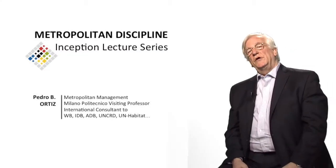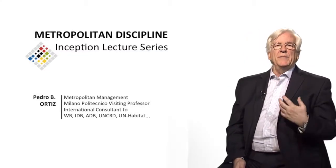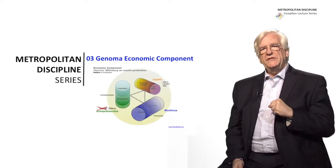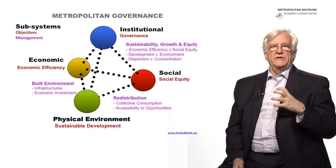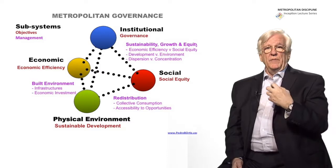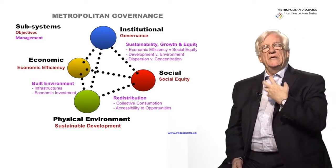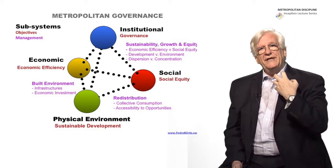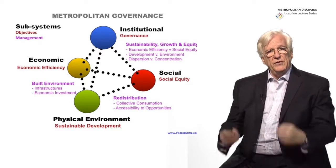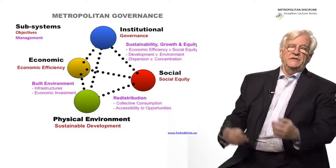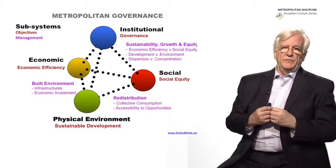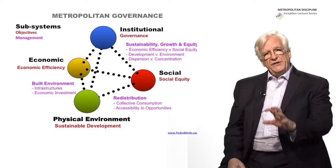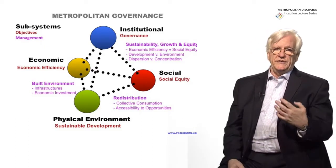Today we are going to deal with the economic component of the metropolitan genome. As we have seen in the previous presentation, the genome of the metropolis is composed of four elements: economics, the social, the physical environment, and the institutional component. We have seen that economy and social are generally in a dichotomy, at odds, trying to pull each other for their own objectives, which is efficiency versus equity. The physical component can in some way help that dialogue, which has to be equilibrated through the institutions — the governance of the metropolis.